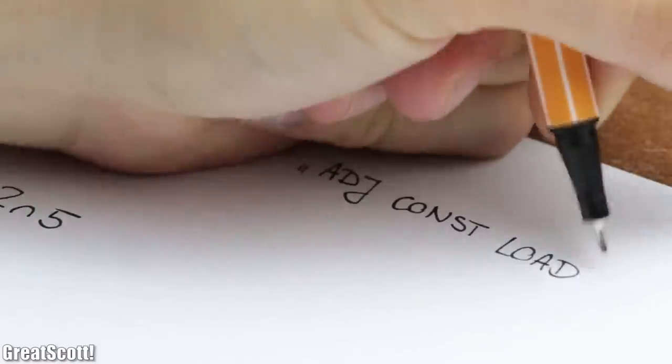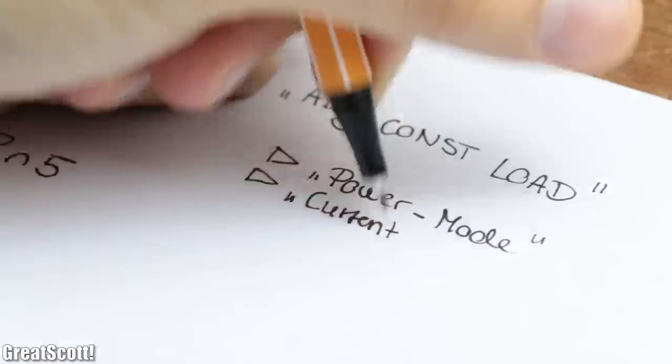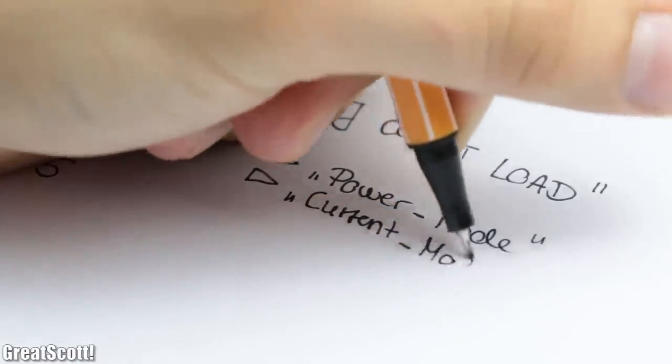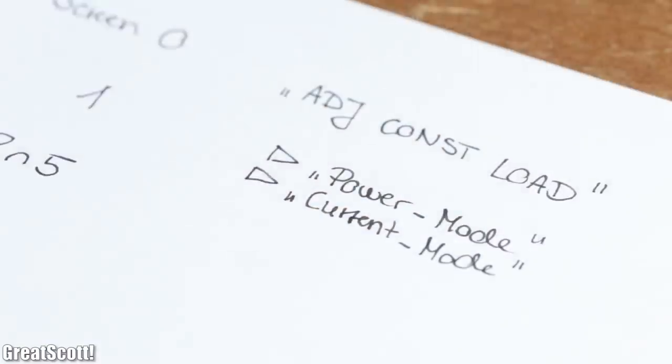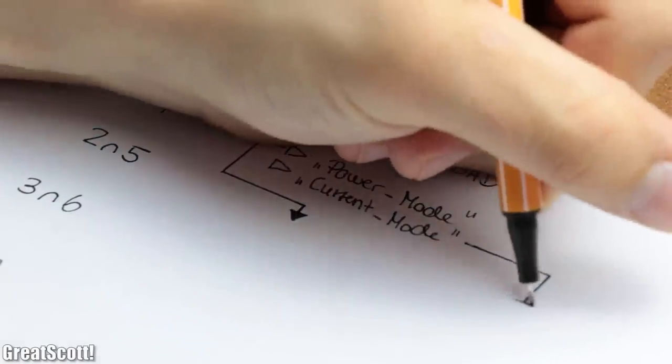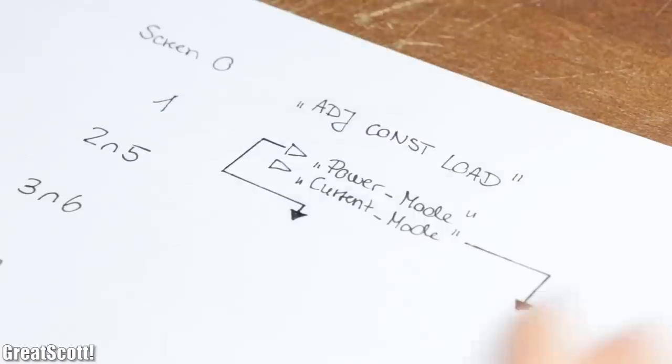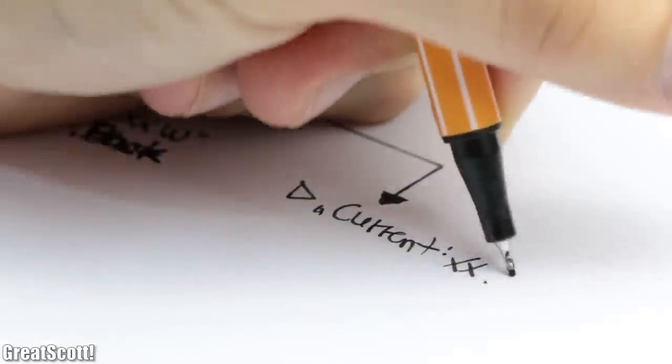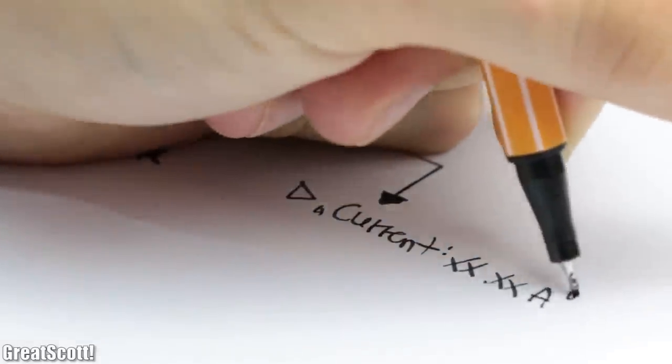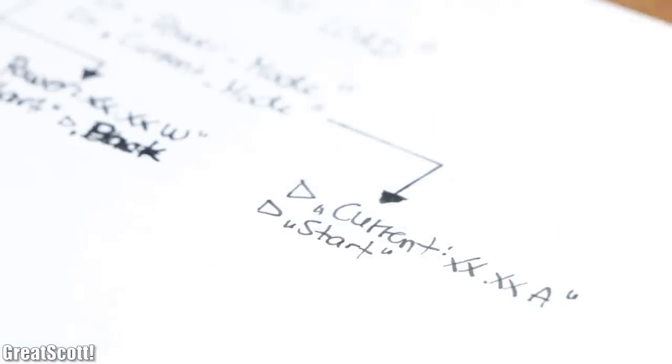So I came up with a total of 8 screens. The first one basically greets the user and the second one lets you choose between power and current modes. After choosing either mode, the rest of the screens between the two modes is very similar. In the first one you can either select to change the power or current, start the test, or go back.